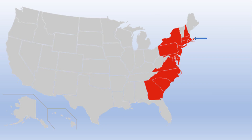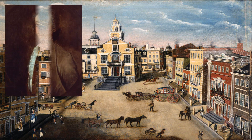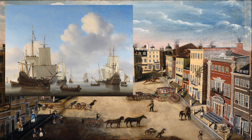In every colony except Massachusetts, protesters were able to force the tea consignees to resign or to return the tea to England. In Boston, Massachusetts, Governor Hutchinson was determined to hold his ground. He convinced the tea consignees, two of whom were his sons, not to back down.